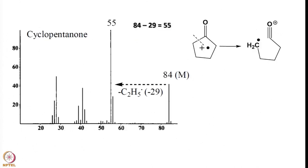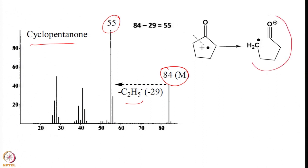Here is one such example — cyclopentanone. The molecular weight is 84. Initially it loses an ethyl radical (29) to give 55, since 84 minus 29 equals 55. Then hydrogen rearrangement occurs to give the subsequent species. Find out the m/z values and interpret those fragments as well — the kind of loss involved can be clearly seen from this spectrum.